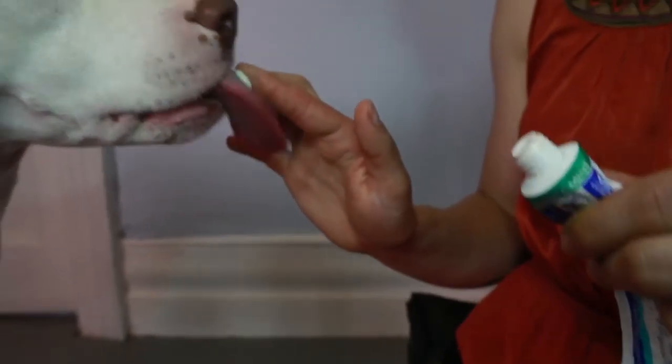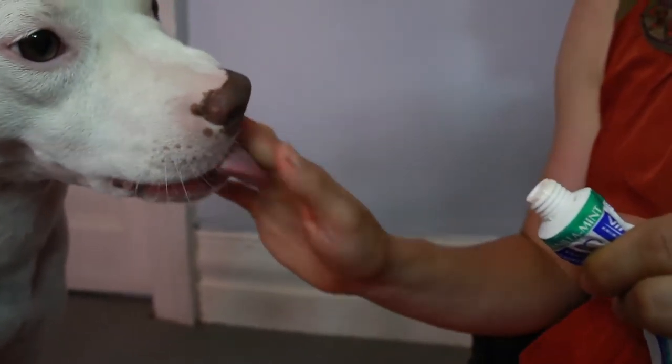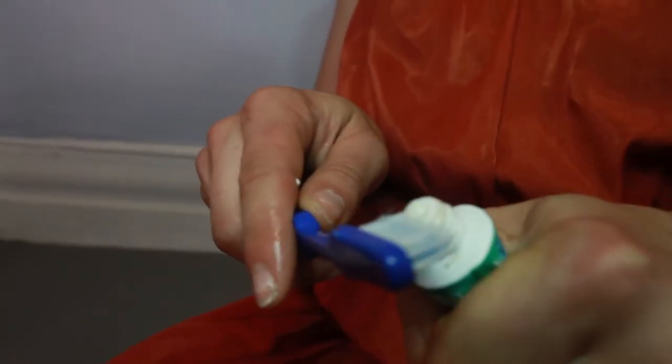The first thing you're going to do is start by putting a little bit of toothpaste on your finger. If your dog fights it, just let them lick the toothpaste from your finger. We want them to get used to your finger near their mouth.